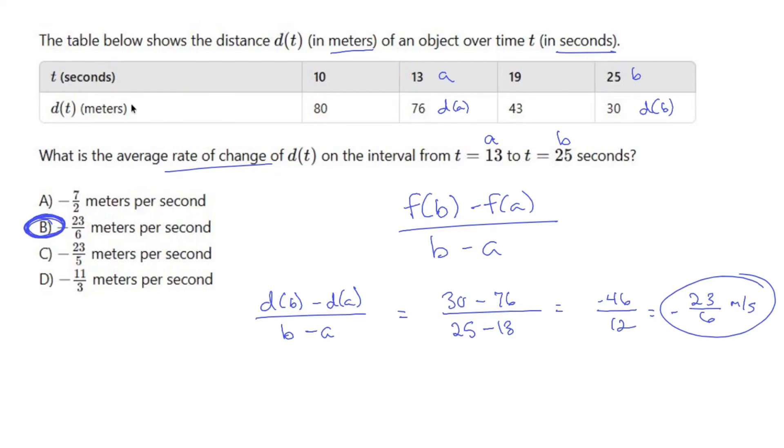Average rate of change with a table. Different from when you have a function or when you have a graph. It's a little bit friendlier in this case. Just label things, plug stuff in, and do a little bit of math. You're set.